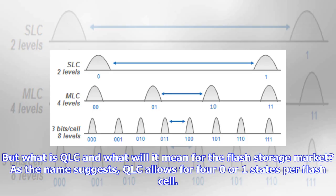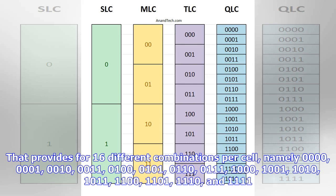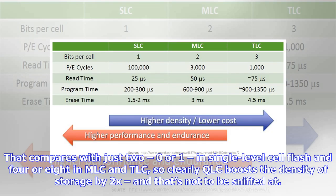As the name suggests, QLC allows for four zero-or-one states per flash cell, providing 16 different combinations per cell — from 0000 through to 1111. That compares with just two states in single-level cell flash, and four or eight in MLC and TLC. So clearly, QLC boosts the density of storage by 2x, and that's not to be sniffed at.